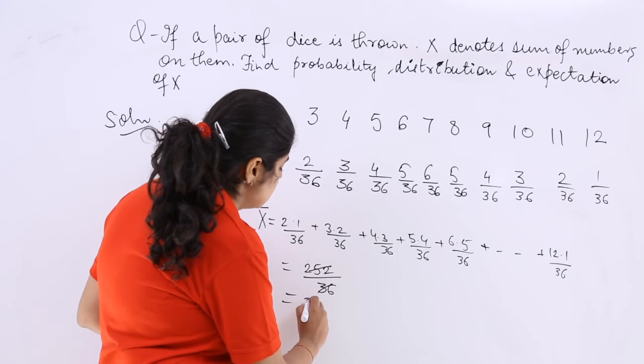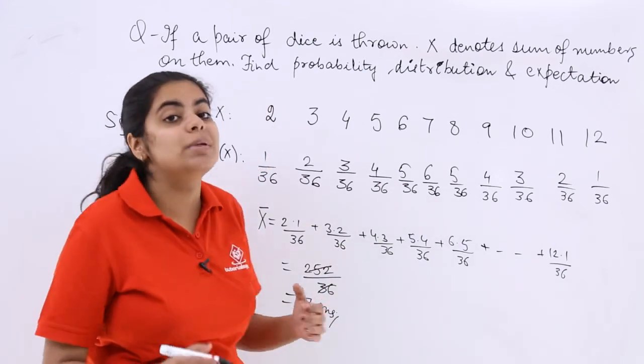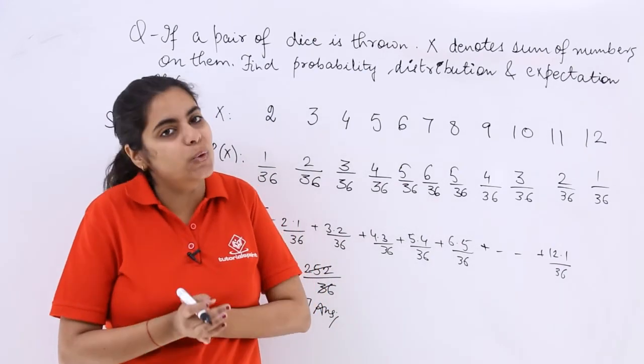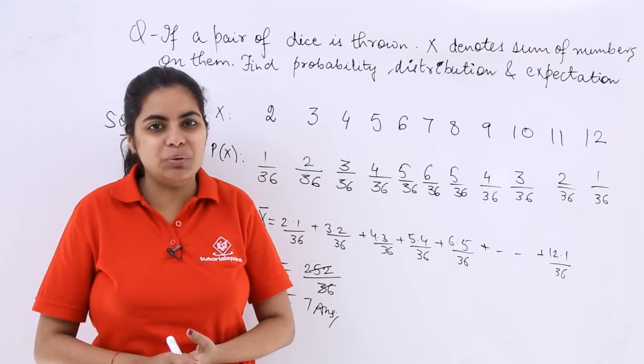Now 36 ones are 36, 36 sevens are 252. So the expectation would be 7 or the mean would be 7. So this is how you have to do this kind of a question.